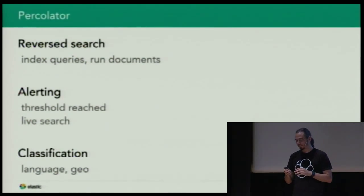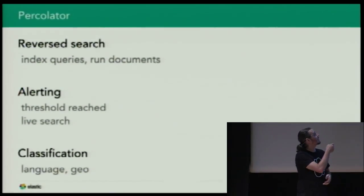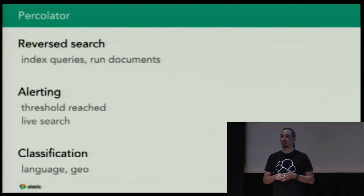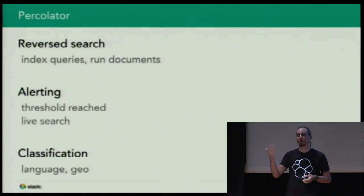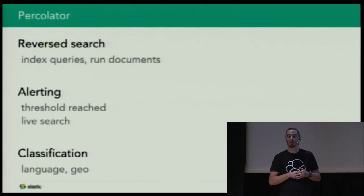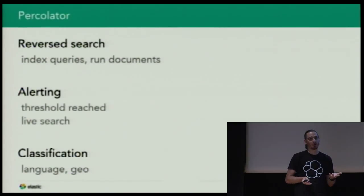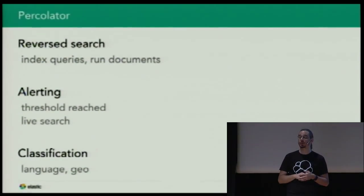That is very powerful, especially because it can use all the features of Elasticsearch. It's a stored search functionality — if you give users a search interface and want them to store their search and be alerted whenever new content matches it, with the percolator you get it essentially for free. You index their query, and whenever there is new content, you run it by the percolator and it tells you to send an email to that user who was interested in that topic.